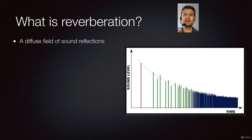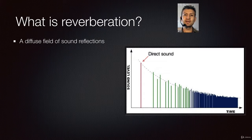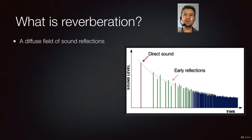Let's say that we clap in a big empty room. The first sound that gets into our ears will be what is known as direct sound. Then, after a few milliseconds, we will perceive the first echoes, also known as early reflections. This occurs within the first 30 to 50 milliseconds — that's why we used that range to create the room effect, remember?